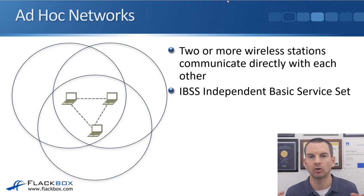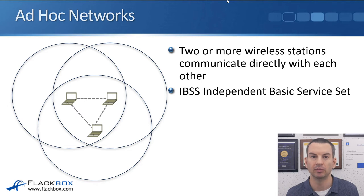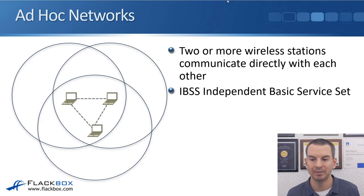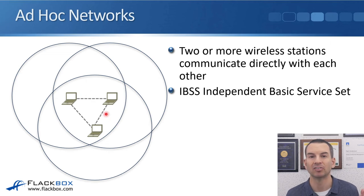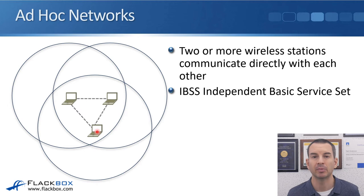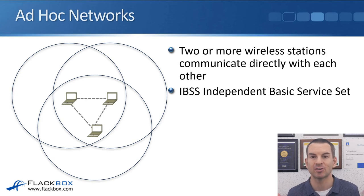Looking at ad hoc networks now. With ad hoc networks, two or more wireless stations communicate directly with each other. Whenever you've got a device communicating on the wireless network, it's known as a station. With an ad hoc network, that is a peer-to-peer network where your wireless stations communicate directly with each other, and that peer-to-peer network is known as an IBSS — an independent basic service set. In the example here, I've got three laptops all communicating directly with each other.